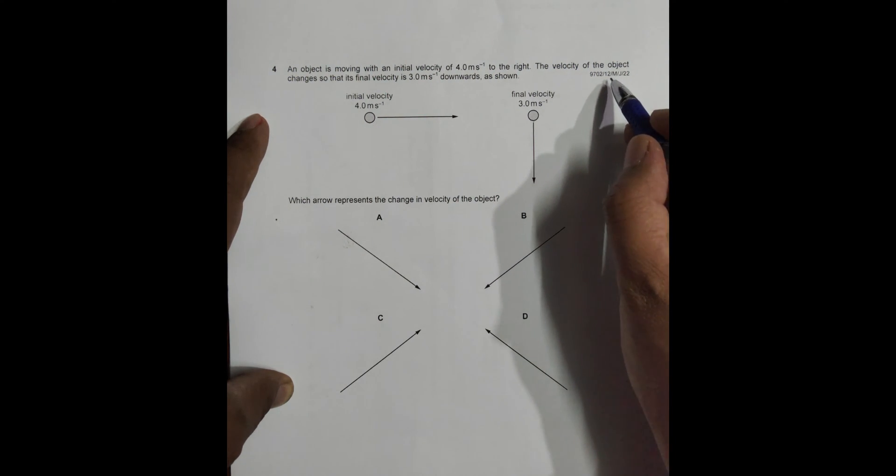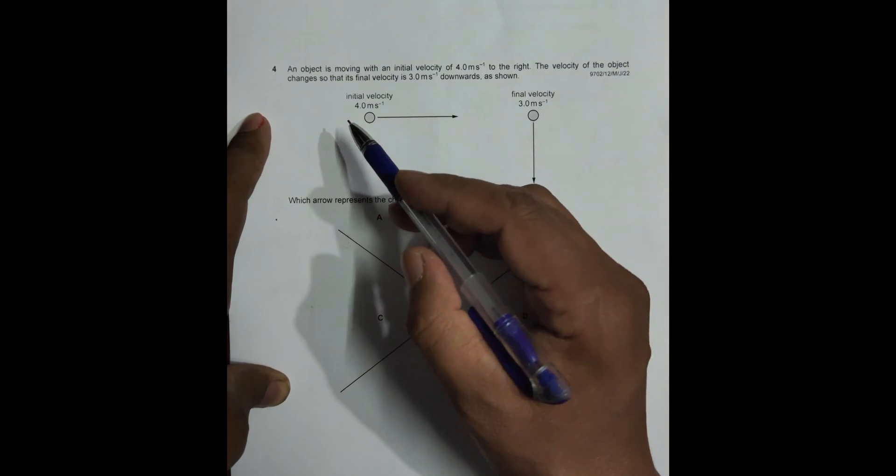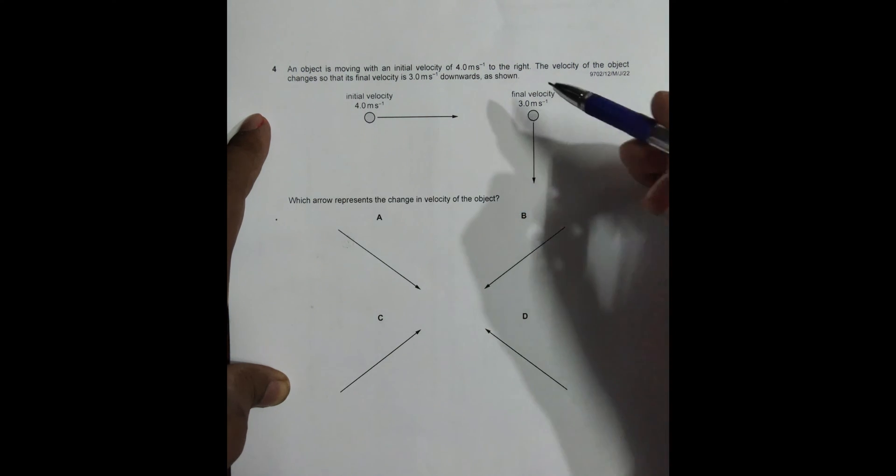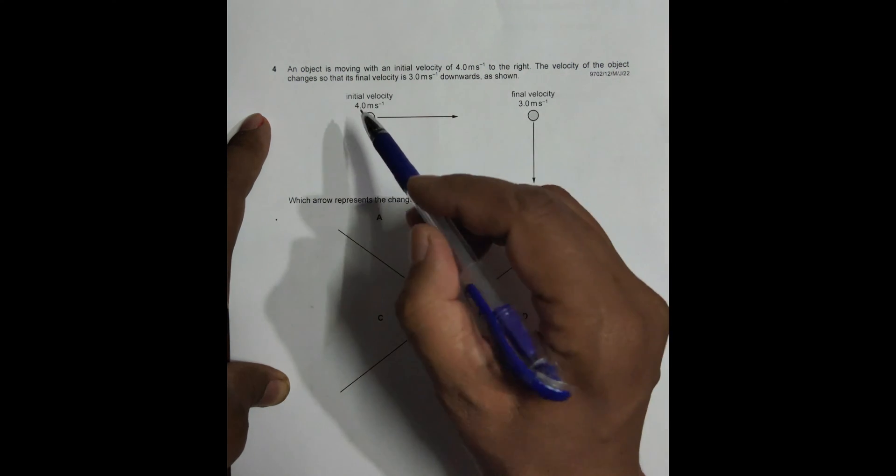Hello folks, this is 2022 May June paper 1-2 and the question number is 4. As the diagram depicts, it is about vectors.